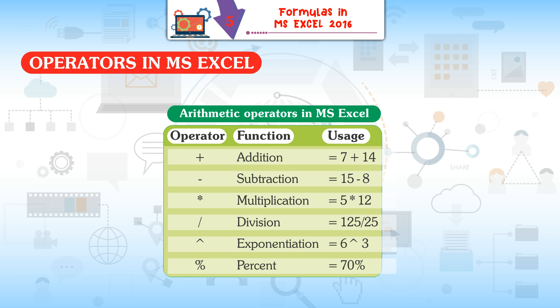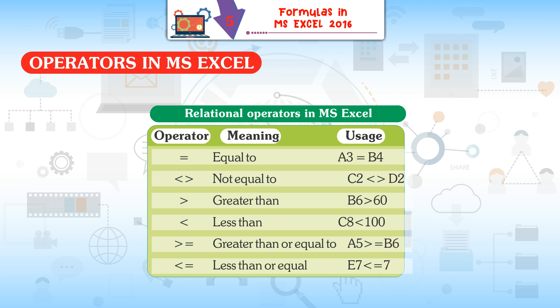Arithmetic operators in MS Excel: Plus for addition (e.g., =7+14), Minus for subtraction (e.g., =15-8), Asterisk for multiplication (e.g., =5*12), Slash for division (e.g., =125/25), Caret for exponentiation (e.g., =6^3), and Percent (e.g., =70%).